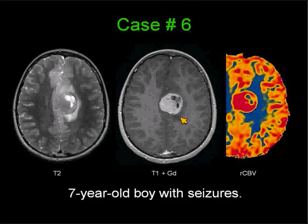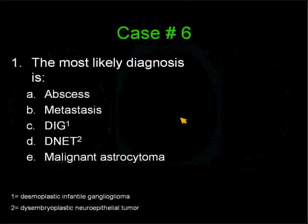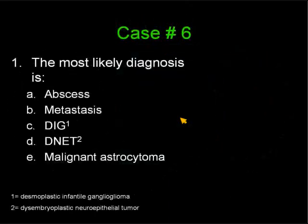Give you a couple of seconds to look through the case, and let's go on to the first question. The most likely diagnosis is: A, abscess; B, a metastasis; C, a desmoplastic infantile ganglioglioma; D, a dysembryoplastic neuroepithelial tumor; and E, a malignant astrocytoma.